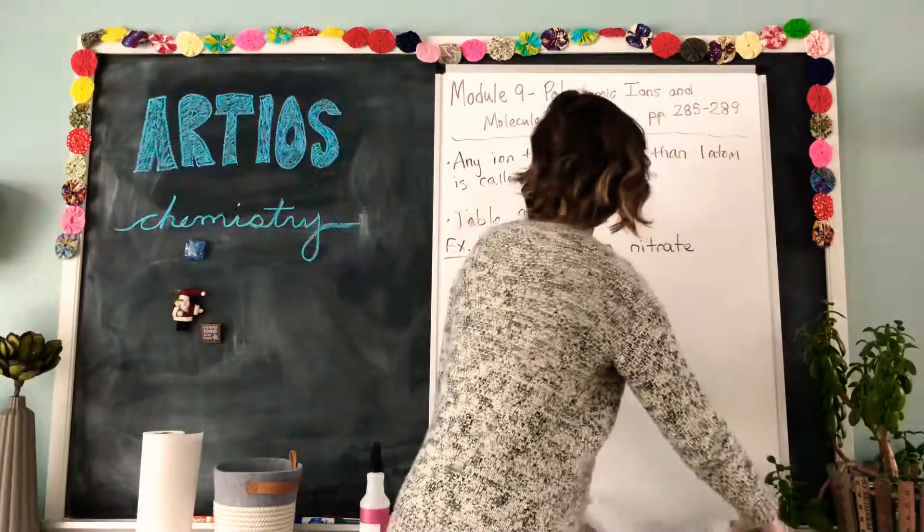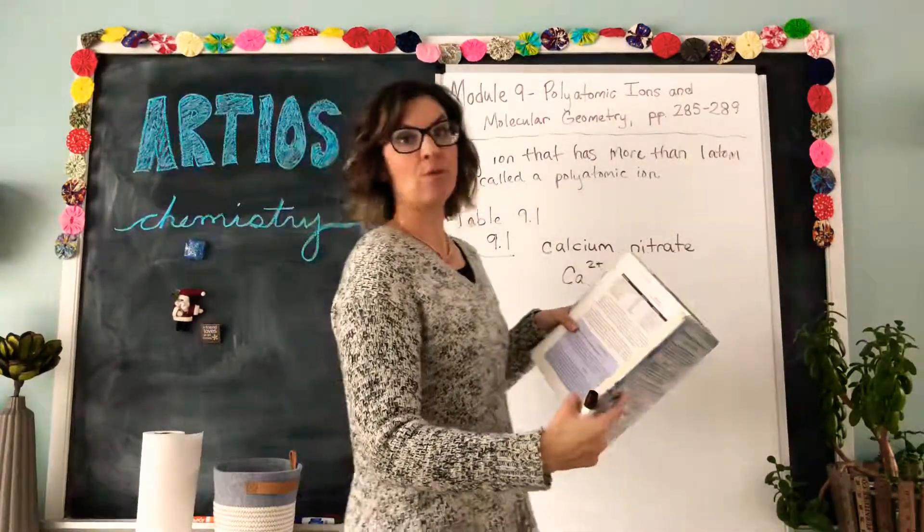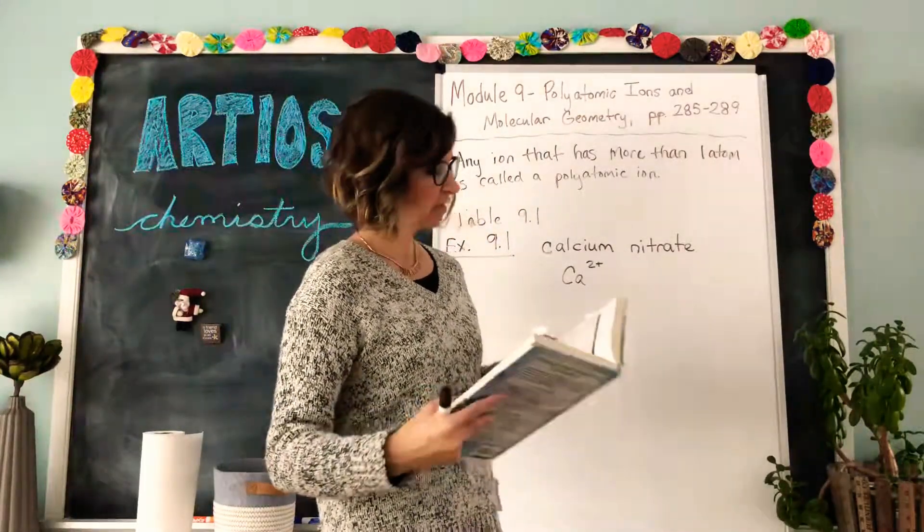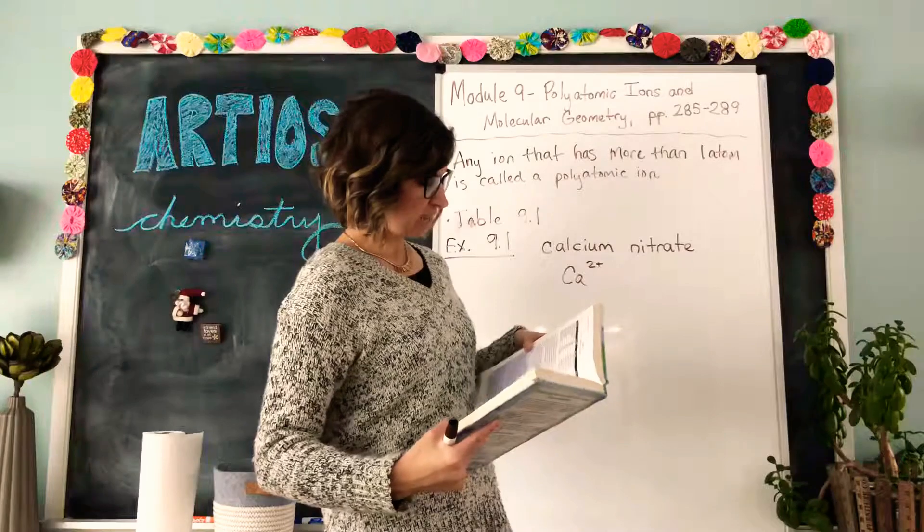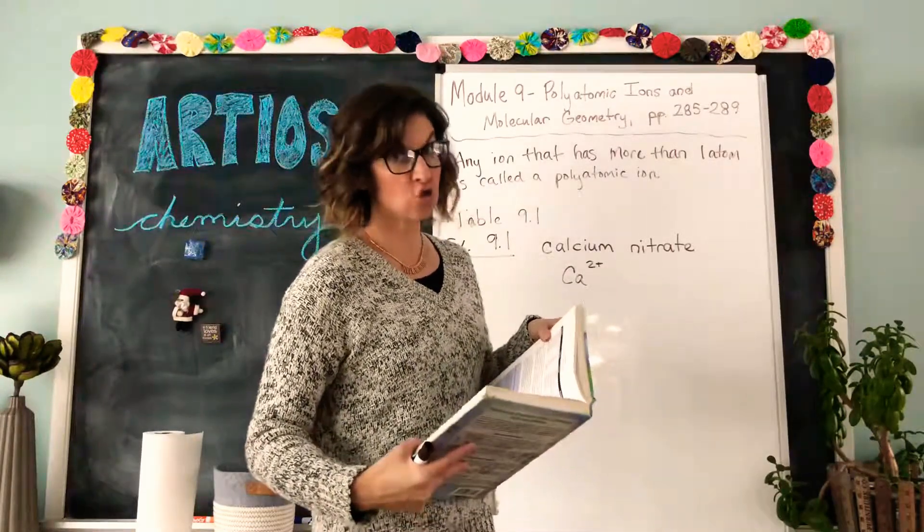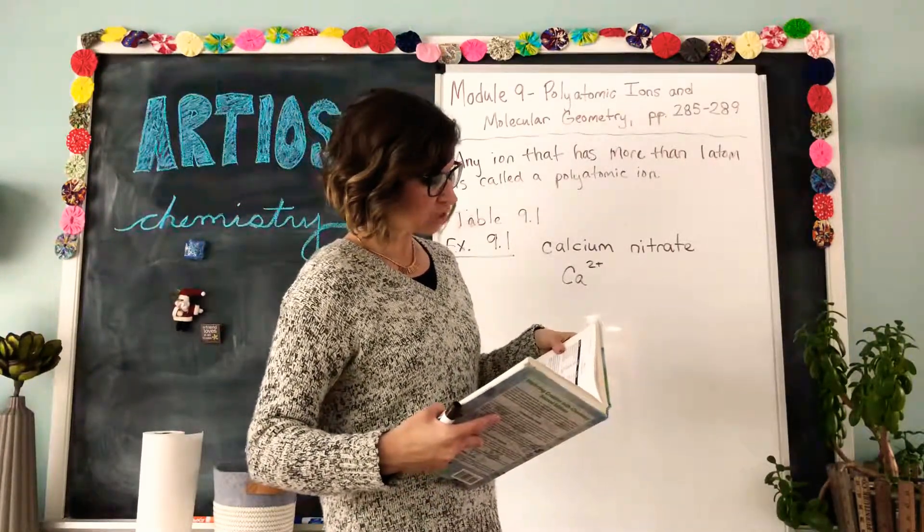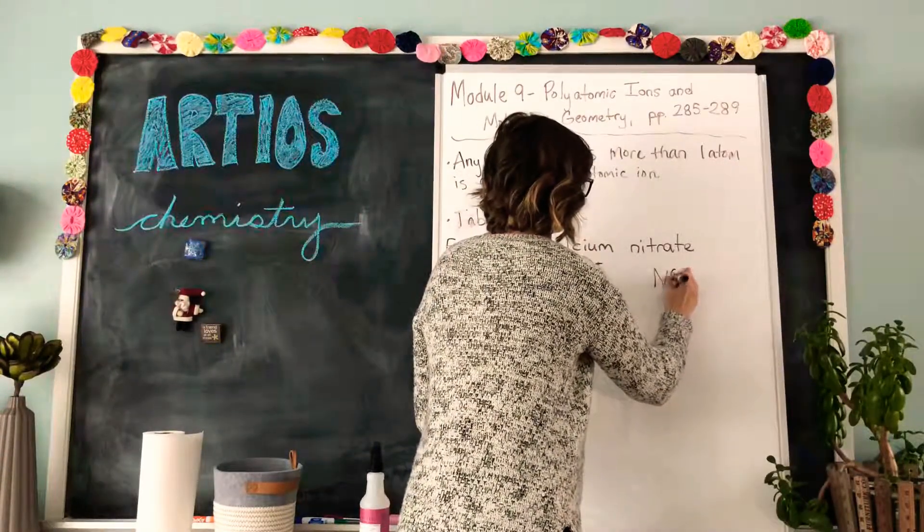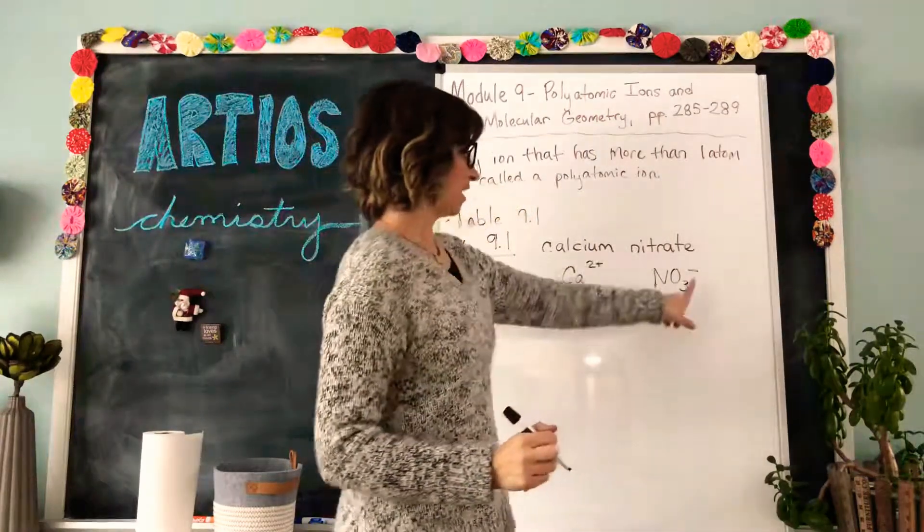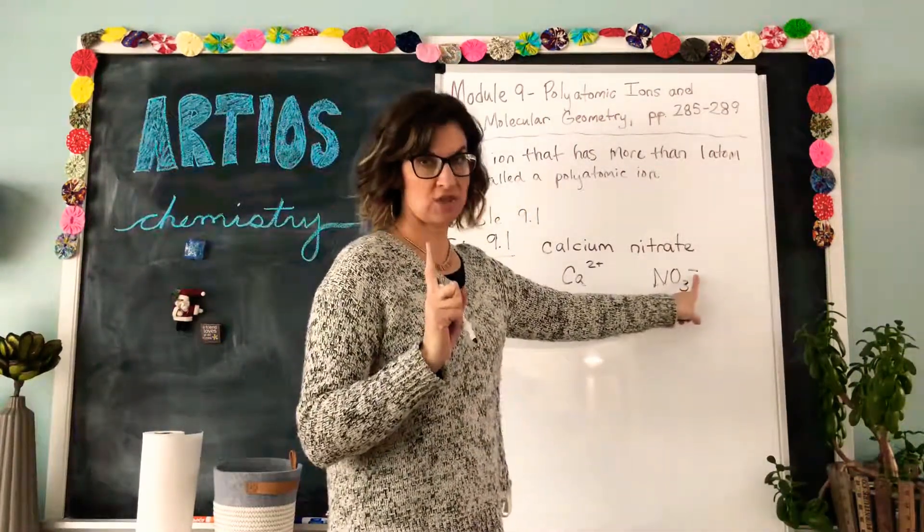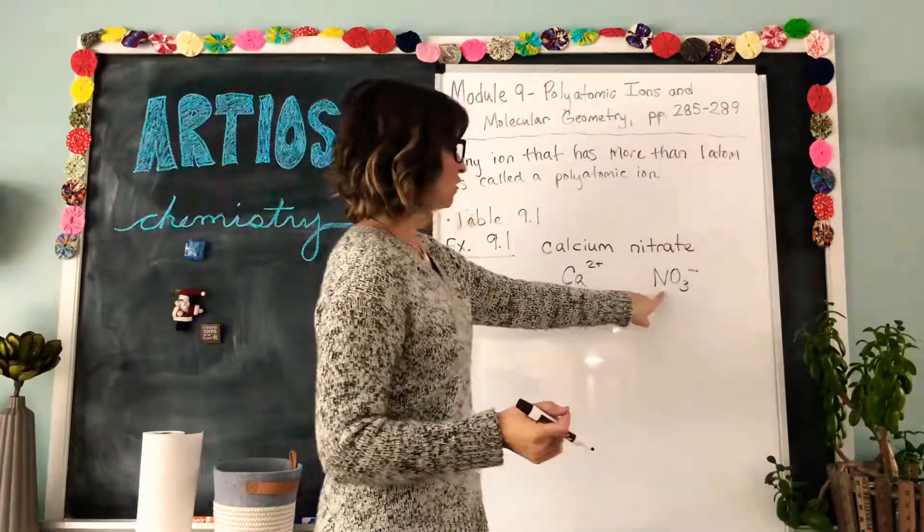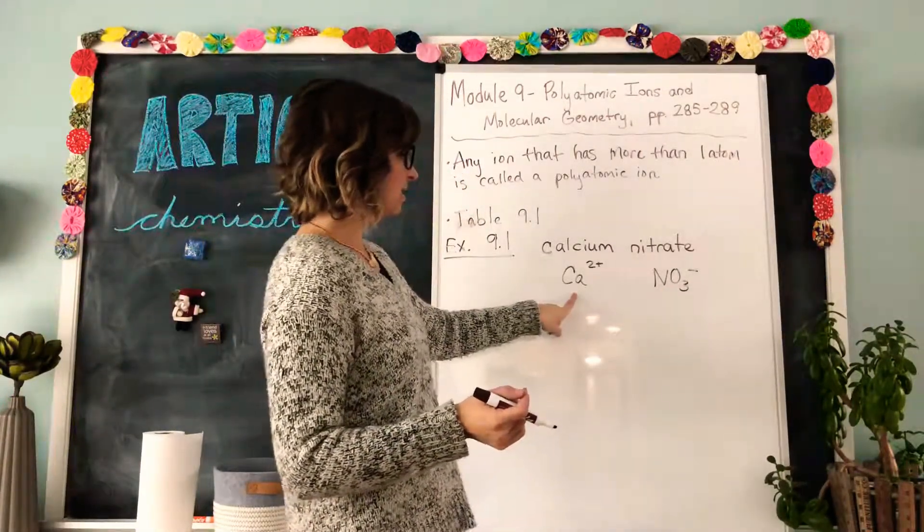Then looking at your table 9.1 or your little index card that you have paused and created just now, you look up nitrate. Be careful because there's also a nitrite, but you see that nitrate is NO3 minus. Which means that it has a one minus charge. We as chemists just don't write the one. So that is nitrate and this is calcium.